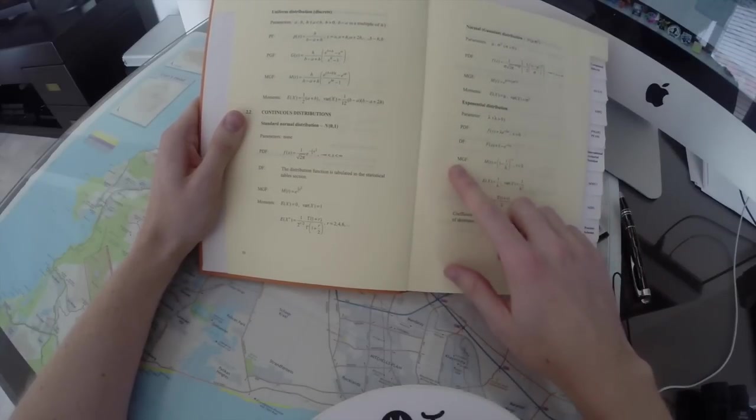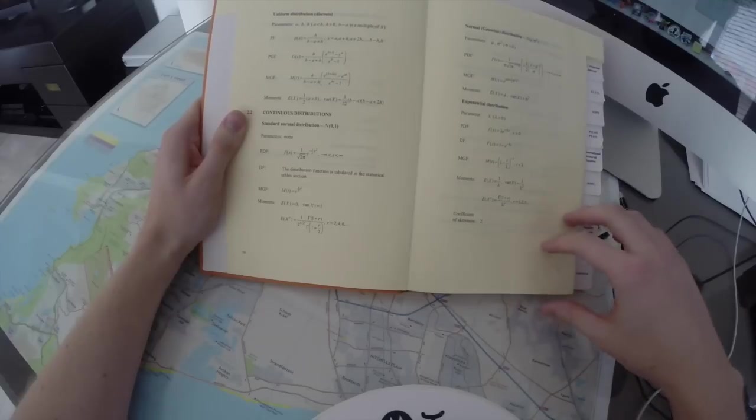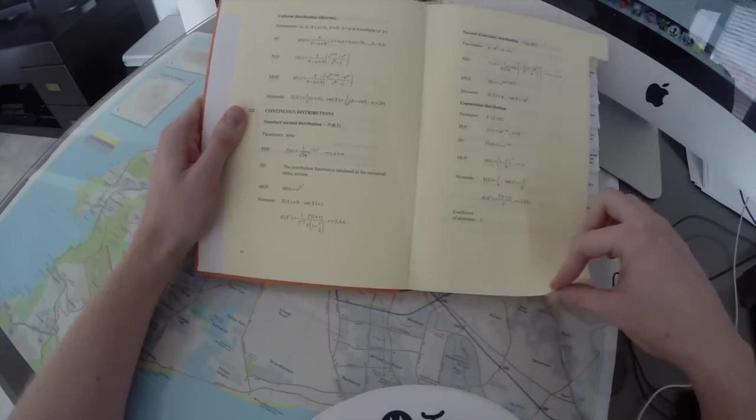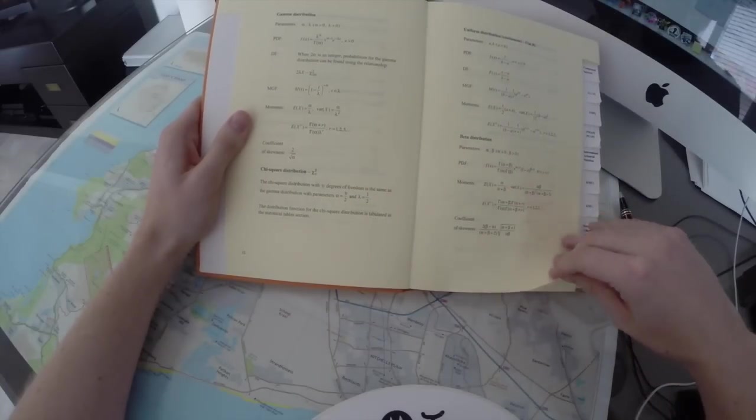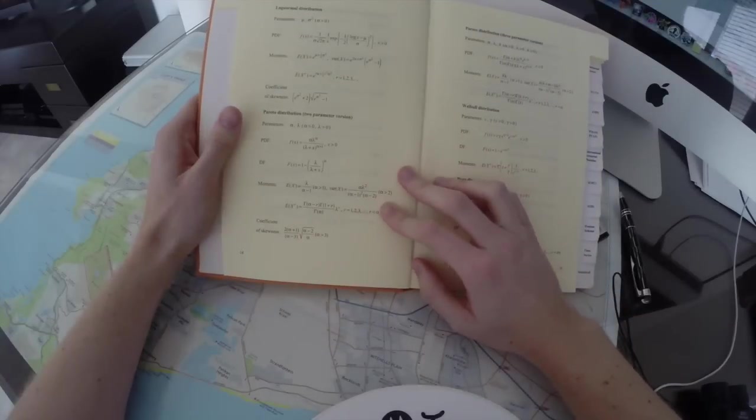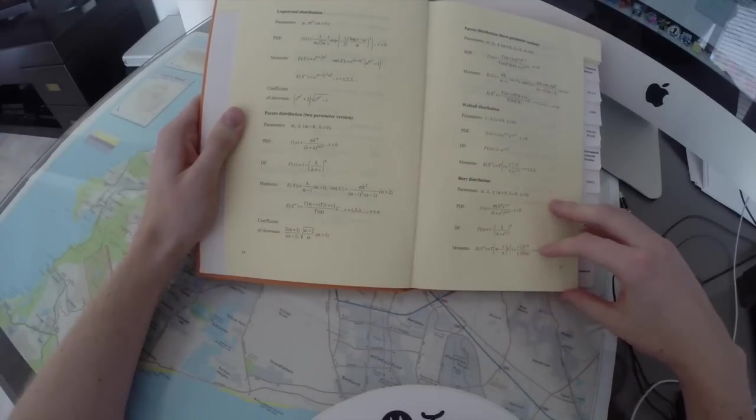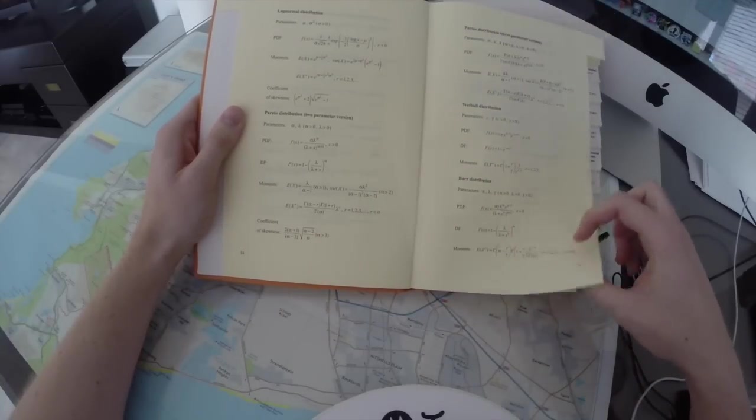And for all of these, you need the moment generating function, the probability distribution function, all of those types of things. There's also the gamma, the chi, the uniform, the beta, the log normal, the Pareto, the Weibull, the Burr. That's a real weird name, Burr.